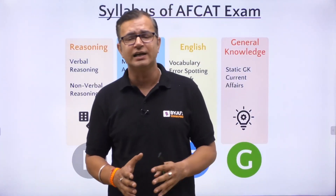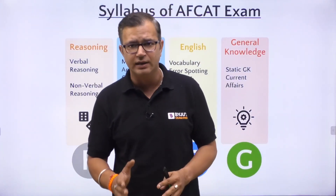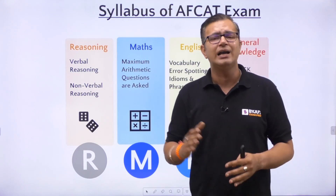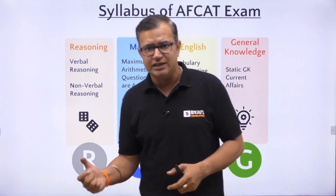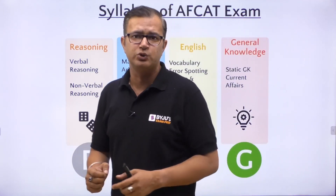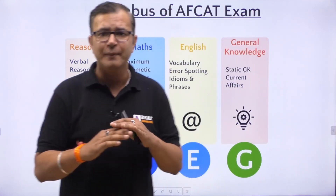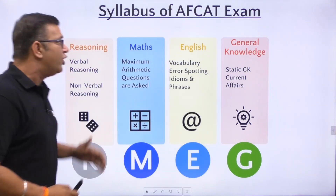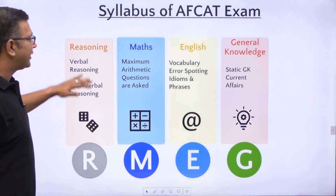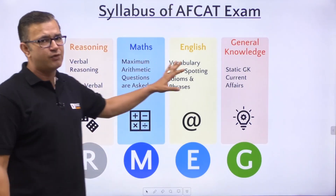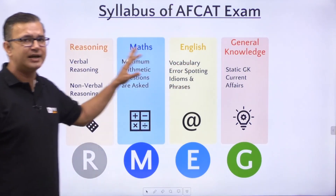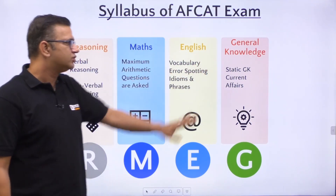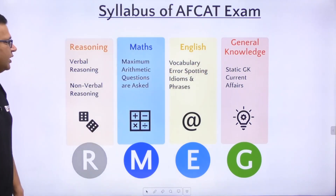The FCAT examination consists of a single paper. In this single paper, there are 4 different sections from which questions are asked. There are no sectional cut-offs. The 4 sections are: Reasoning, Maths, English, and General Knowledge.